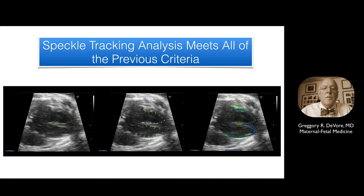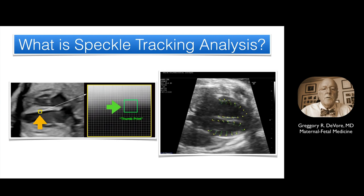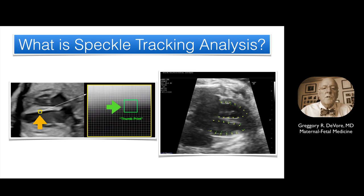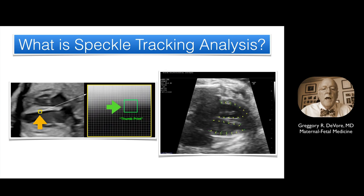Let's now explore this new diagnostic tool developed for fetal use. Using the right ventricle as an example, the user simply places the cursor at the base of the ventricle at points one and two, and at the apex at point three. This activates the TomTec software to compute the endocardial borders at end systole and end diastole. Once the yellow lines identify the contour of the endocardium, the user can adjust each point as needed. The endocardium of each ventricle is composed of digital speckles of various shades of gray and intensity, which can be tracked by computer software as the ventricles contract.